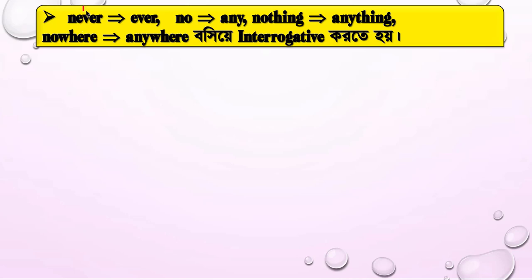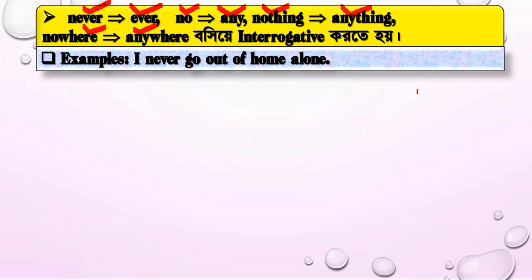There is another important rule: 'never' changes to 'ever,' 'no' changes to 'any,' 'nothing' changes to 'anything,' and 'no higher' changes to 'any higher' in interrogative sentences. For example: 'I never go out of home alone.'